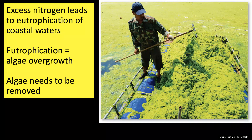When too much nitrogen is added, algae will overgrow, leading to eutrophication. This picture shows the algae cleanup in Qingdao, China, before the 2008 Olympic sailing events. The Chinese government undertook a massive cleanup of floating green algae in order to host the Olympic Games, specifically the sailing competition. The cleanup effort involved tens of thousands of people who removed about 682 million metric tons of algae — equivalent to 1.5 trillion pounds of algae — at an estimated cost of $87.3 million.